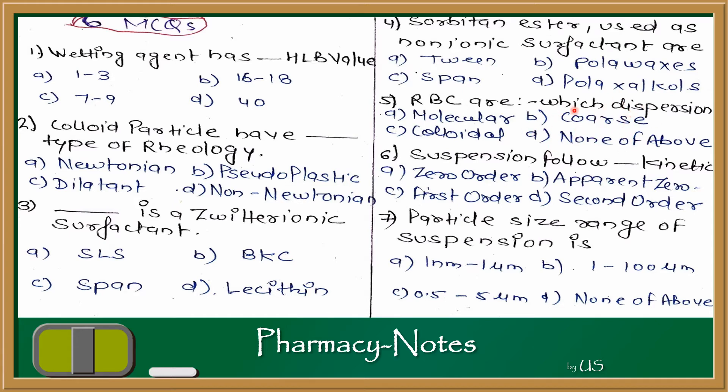Then question number 6: Suspension follows dash kinetics. If you remember drug stability studies, apparent zero order stability is shown by suspension. So the suspension is apparent zero order flow. The answer would be apparent zero order.